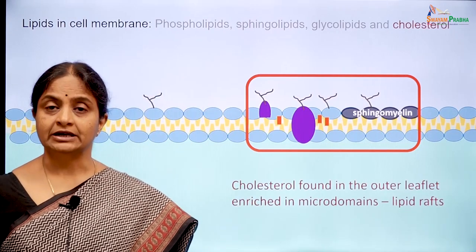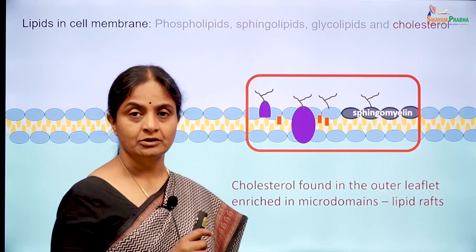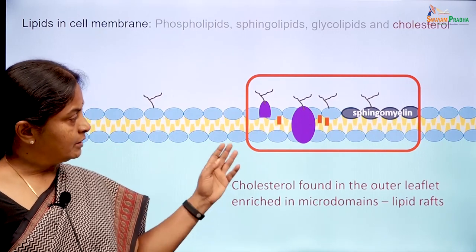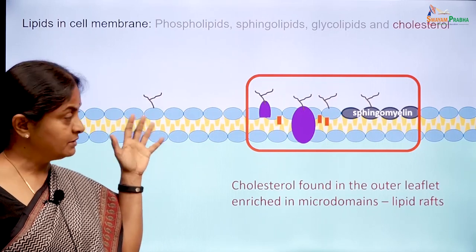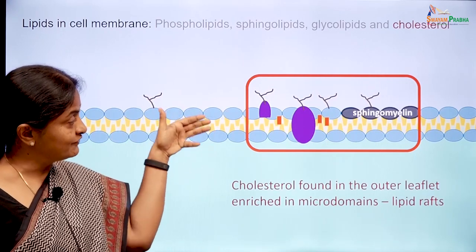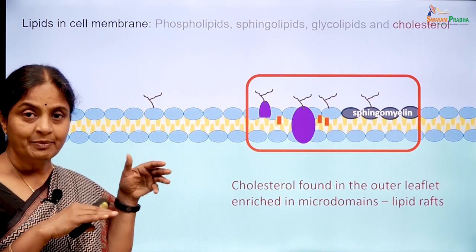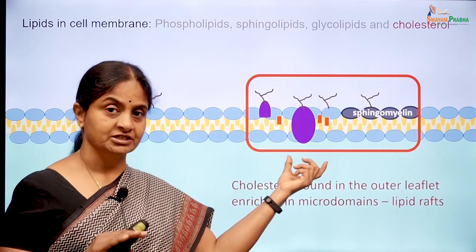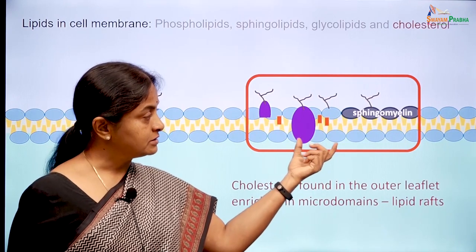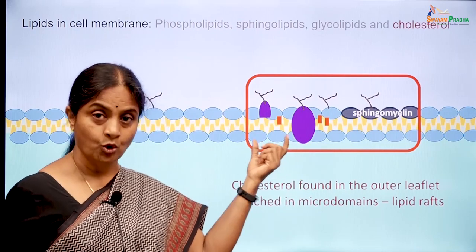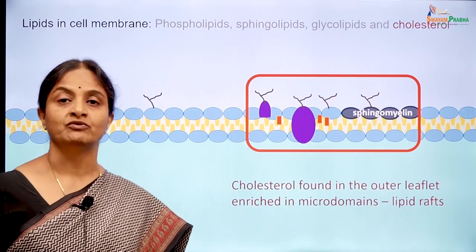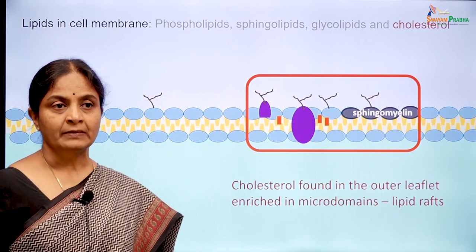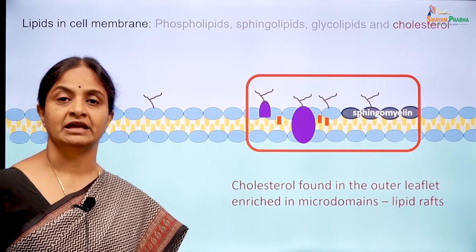Lipid rafts are defined as membrane microdomains enriched in cholesterol, sphingomyelin and some proteins. While the rest of the cell membrane lipids have lateral mobility — outer leaflet phospholipids and inner leaflet phospholipids moving independently — in a lipid raft, mobility is restricted, and even if the molecules move, they move as a whole unit: both outer and inner leaflets moving together. They are more rigid parts of the cell membrane and a lot of research is happening in this area now.